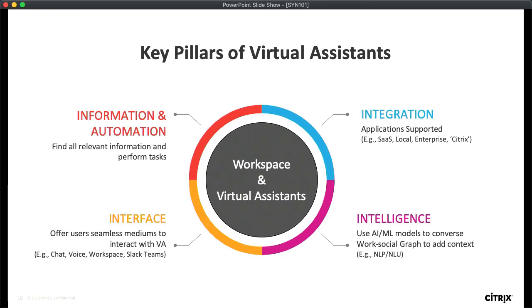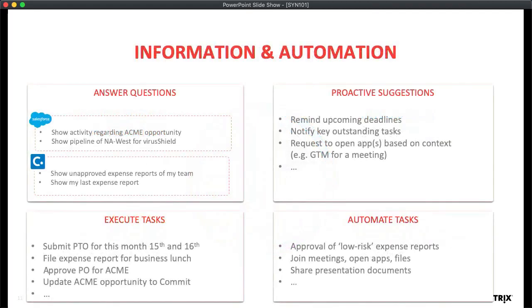Let's double-click on each of those to understand the scope for the Citrix Virtual Assistant. In terms of functions and capabilities, the first is asking questions and getting answers — for example, asking about the status of a particular sales opportunity, or asking it to show the list of expense reports you need to approve. You should be able to ask questions and get answers right away. The other aspect is getting some work done — submitting a PTO, approving something, or even some complex tasks.